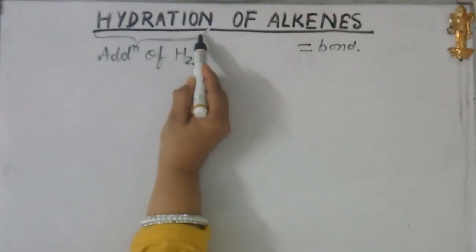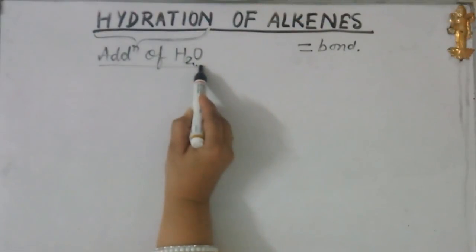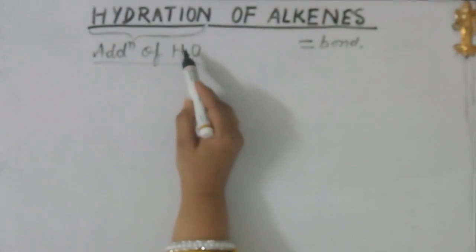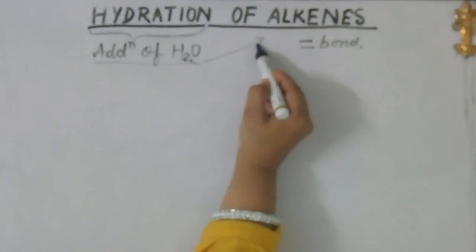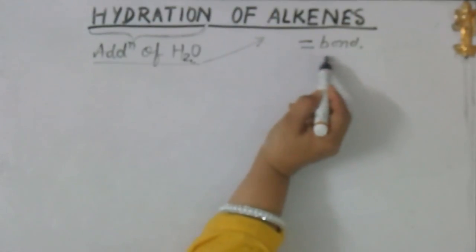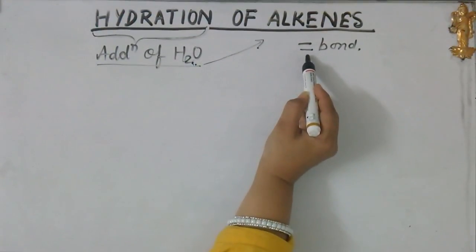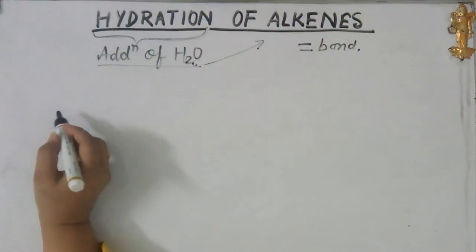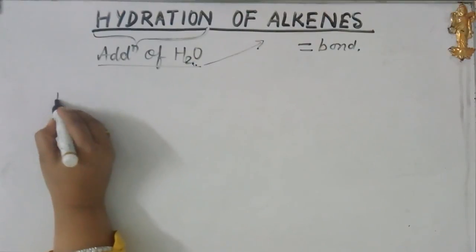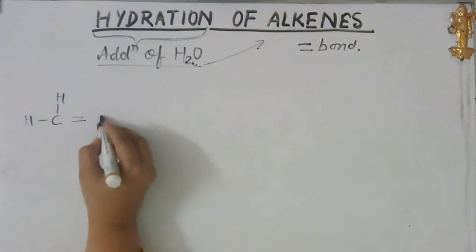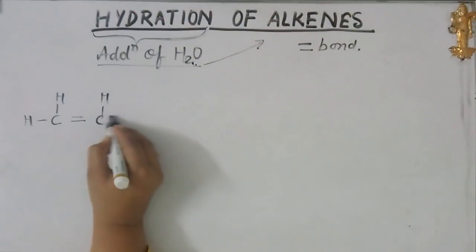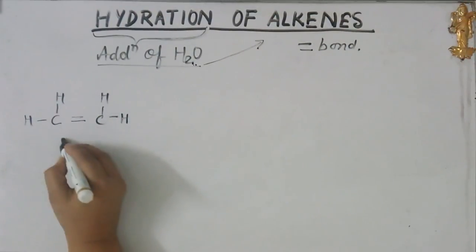Hydration literally means addition of water. So in this particular reaction we are going to add water to the alkenes. As we know, the alkenes are having double bonds in them and because they have double bonds they are more sensitive towards the addition reaction. I think they have done it in the 10th standard also. Here I am writing down the simplest alkene. This is CH2 double bond CH2, the simplest alkene called ethene.